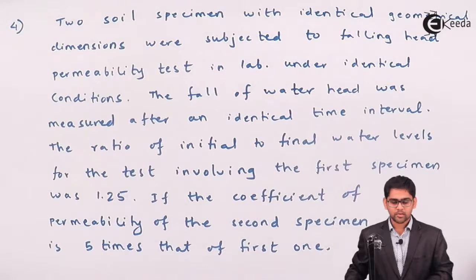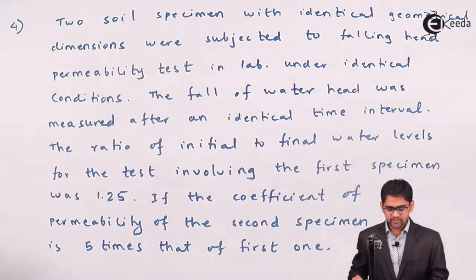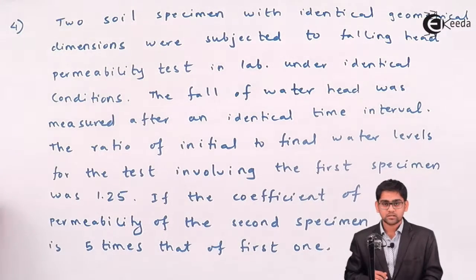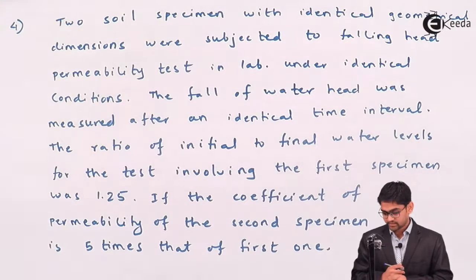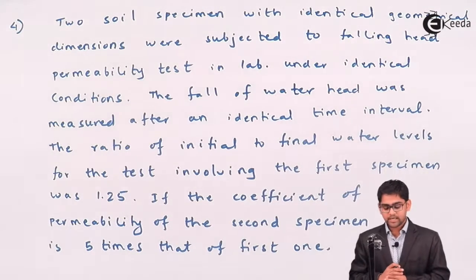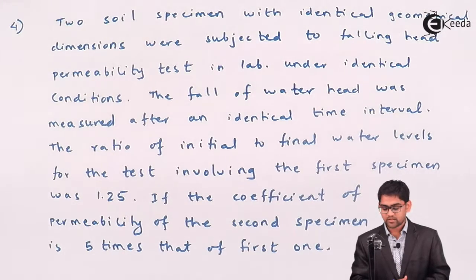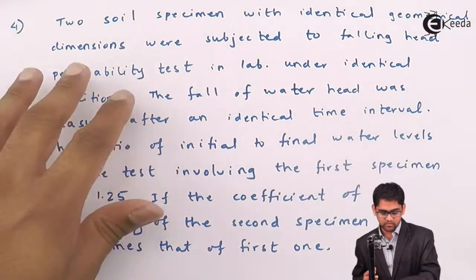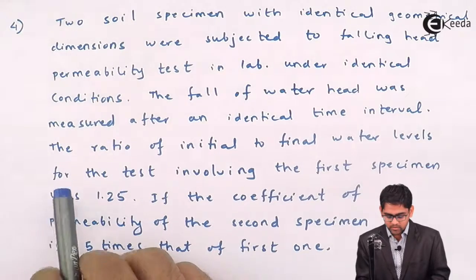We will move ahead with problem number 4 in the permeability of soil chapter. The problem states that two soil specimens have identical geometrical dimensions, meaning the area and length are the same. These were subjected to a falling head permeability test in the laboratory under identical conditions, and the fall of water head was measured after an identical time interval.